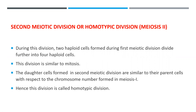We know there are two types of cell division: mitosis and meiosis. It has been seen that meiosis 2 is exactly the same as mitosis. The daughter cells formed in the second meiotic division are similar to the parent cells with respect to chromosome number formed in meiosis 1. That is why it is called homotypic division — the daughter cells formed in meiosis 2 are similar to the daughter chromosomes formed in meiosis 1.